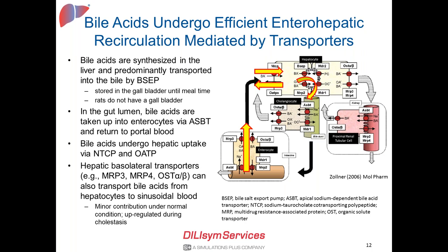These basolateral efflux transporters have been shown to be upregulated during cholestasis when the normal biliary excretion pathway is perturbed or blocked. Under normal conditions, minimal bile acids undergo renal excretion. The recovery of bile acids in urine is very minimal under normal conditions but has been reported to increase under cholestatic conditions, serving as a compensatory mechanism when normal biliary excretion of bile acids is blocked.